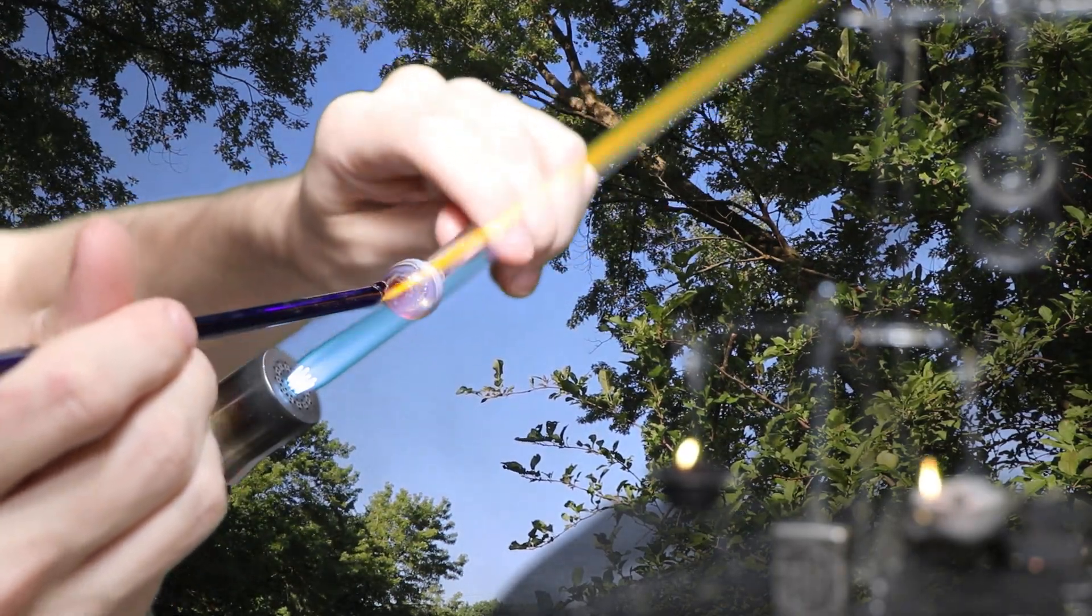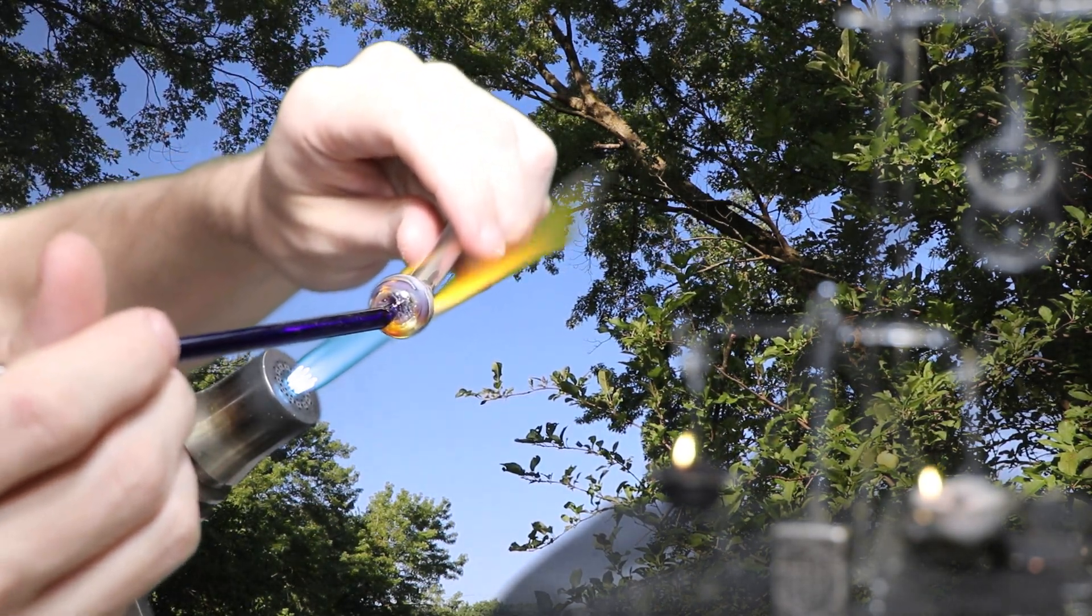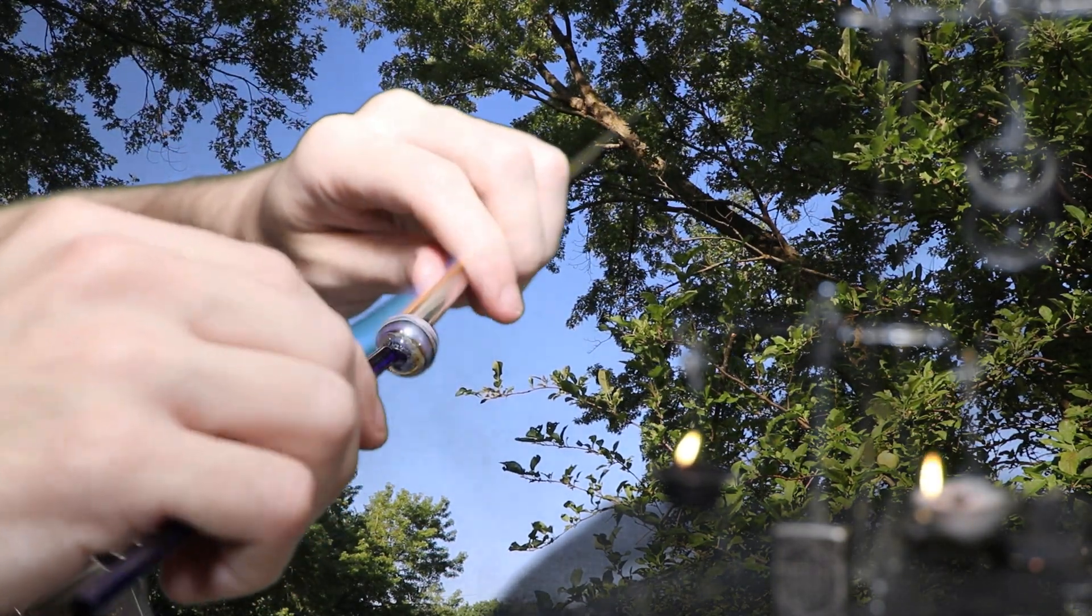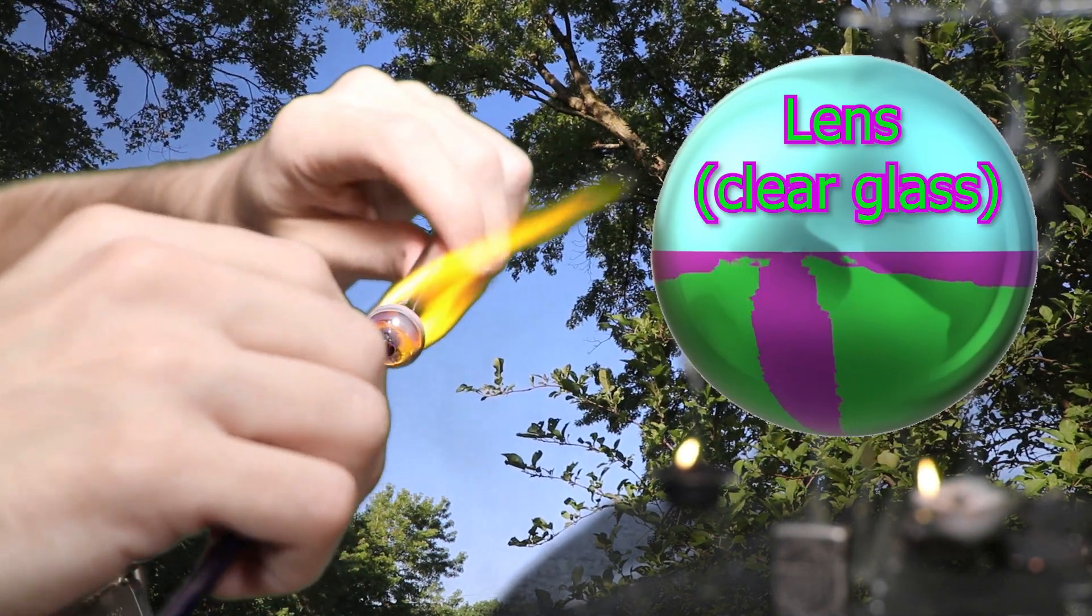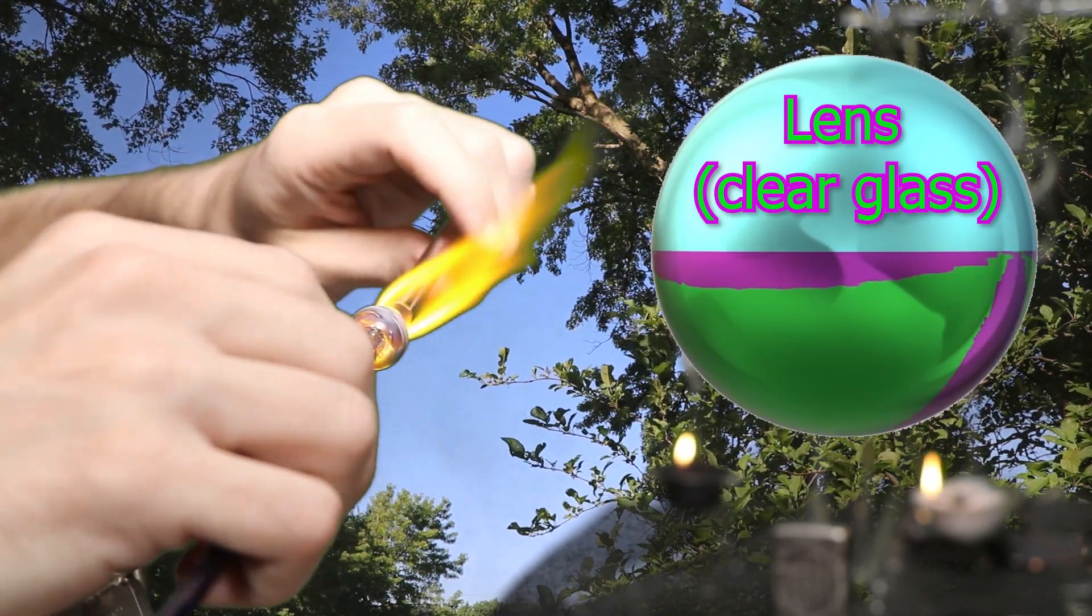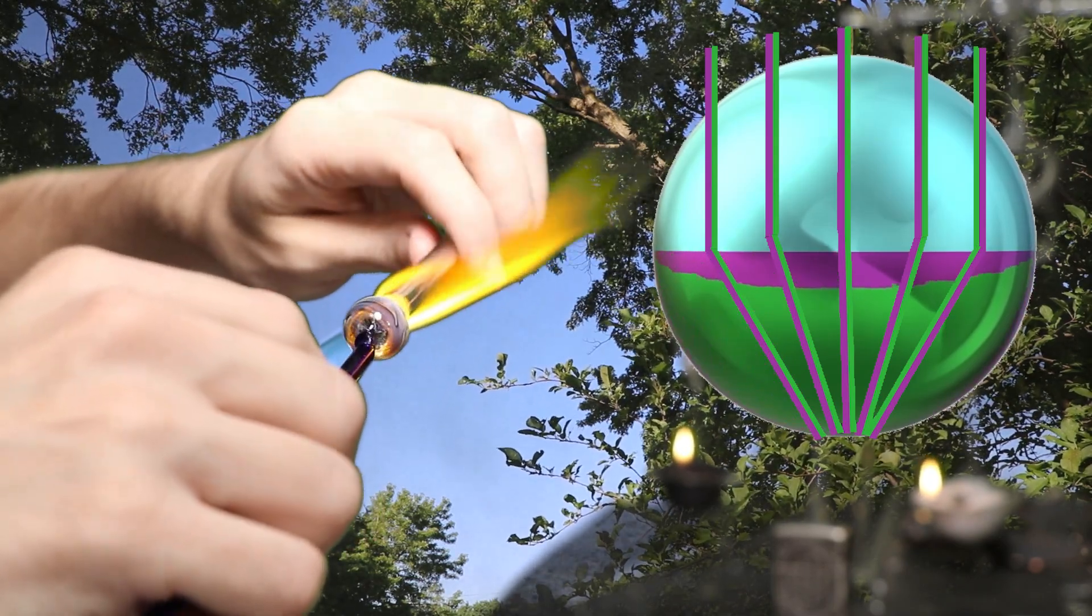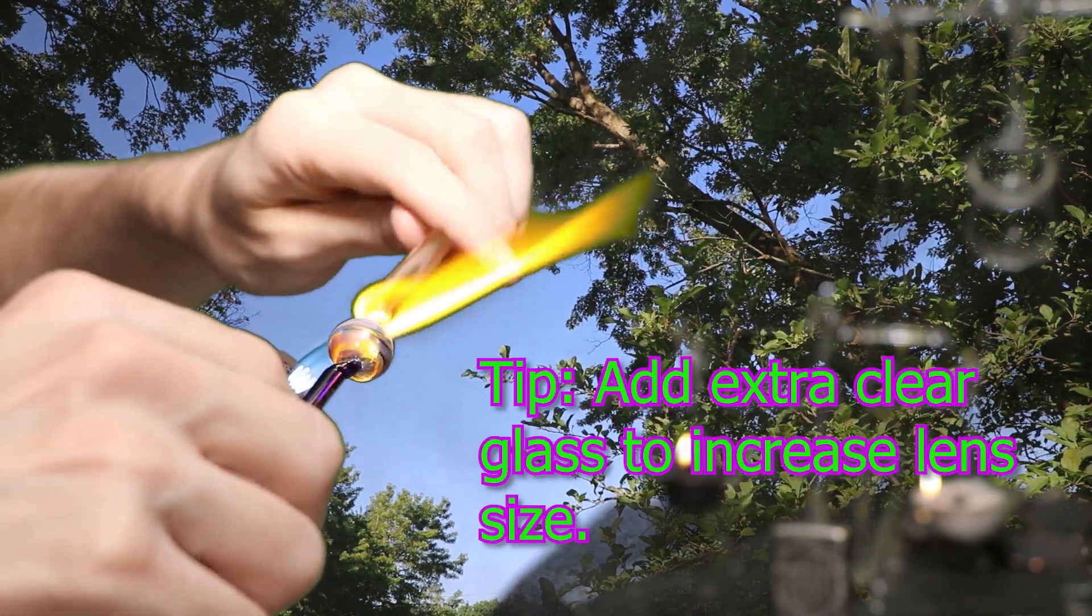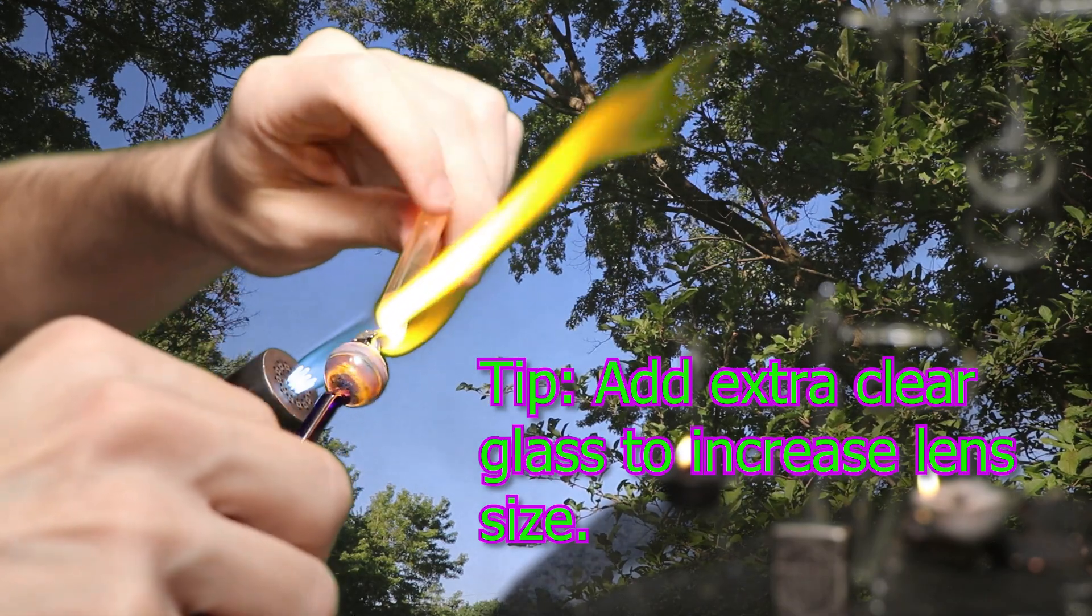I'll attach a temporary glass handle on the back called a punty in order to melt off the rod in the front. And then I'll start working on the lens which is roughly about 50% of the sphere. And so half of the marble is clear glass, which is the shape of a magnifying glass. So anything below that, the other half, is going to look larger than it really is.